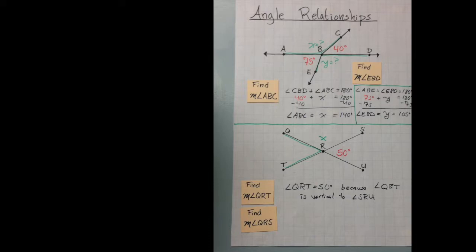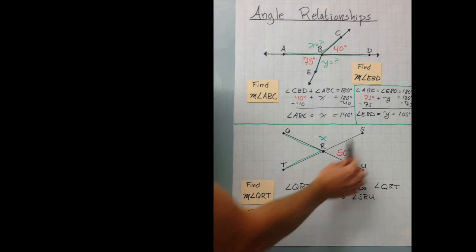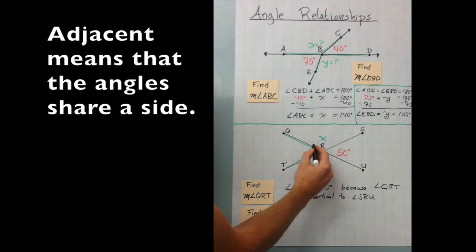All right. If you're with me, let's finish this one off. X, or QRS, is not vertical to 50. In fact, it's adjacent to 50. And it also happens to be supplementary, which means that it forms a straight line.